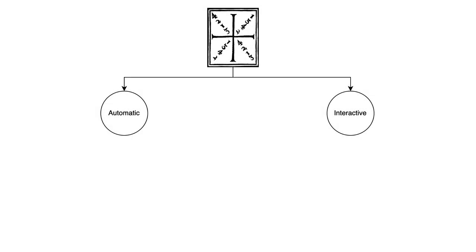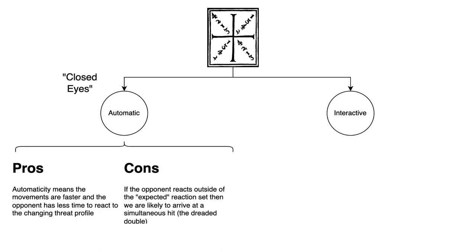This video has been purely about the Meyer Square and how to learn it. But let's close with some remarks about when and how you might apply the Meyer Square, or indeed any other fencing technique. There are two basic ways we can employ any fencing technique: an automatic technique or an interactive technique. Automatic mode is basically the same as a closed-eyes attack in modern fencing — you deploy the entire technique as a combination without waiting for the opponent's responses. The benefit is it's much faster and the opponent has less time to respond. The drawback is that if the opponent does something unexpected, you're likely to double out because you're just using the entire sequence as-is rather than responding to their movements.